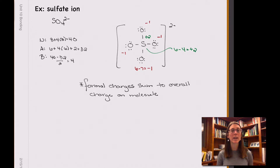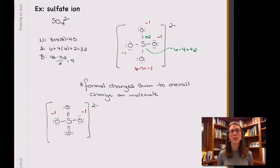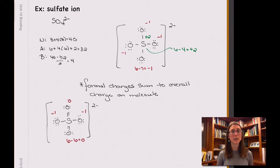I'm going to draw another one down below and take a look at the formal charges of that. So in this way of drawing sulfate, we have two different types of oxygens. One type looks just like before — six non-bonding electrons and one bond — for a formal charge of negative one. However, the other two oxygens have two non-bonding electrons and two bonds, ending up with a total of six valence electrons allotted to them. Oxygen normally has six, so those are going to have a formal charge of zero. In this structure, sulfur has six bonds, which means it's allotted six valence electrons, and it normally has six, so its formal charge is zero as well.